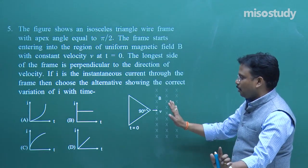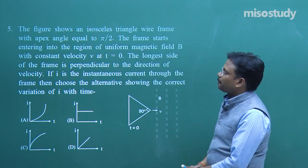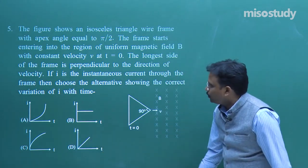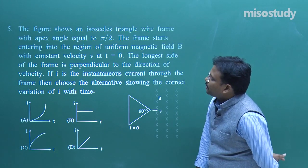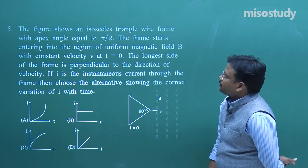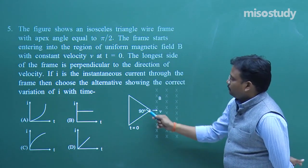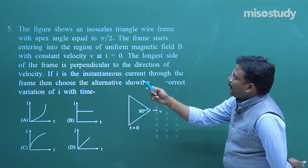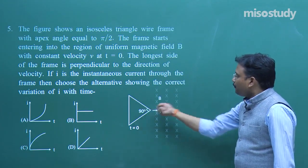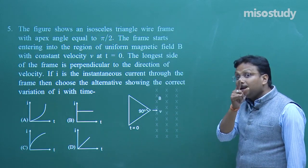This next problem looks big but is actually simple — let me decode it step by step. The figure shows an isosceles right-angle triangle wire frame with apex angle equal to π/2. The frame starts entering a region of uniform magnetic field B. B is not changing and θ is not changing, but the area inside the field region is changing as the frame enters.